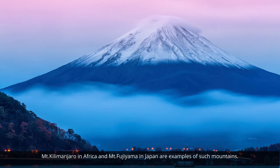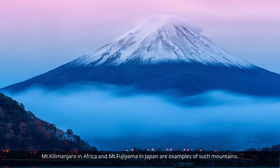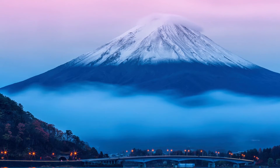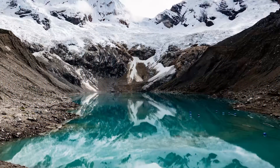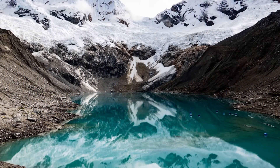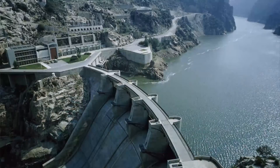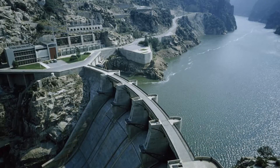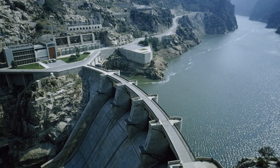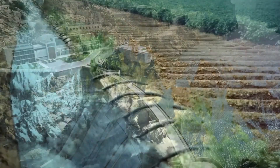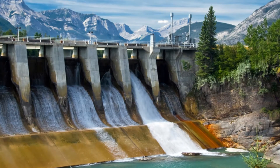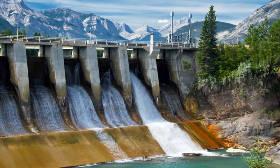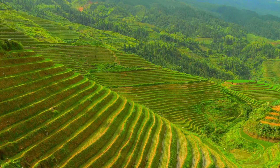Volcanic mountains are formed due to volcanic activity. Mount Kilimanjaro in Africa and Mount Fujiyama in Japan are examples of such mountains. Mountains are very useful — they are a storehouse of water. Many rivers have their source in the glaciers in the mountains. Reservoirs are made and the water is harnessed for the use of people.